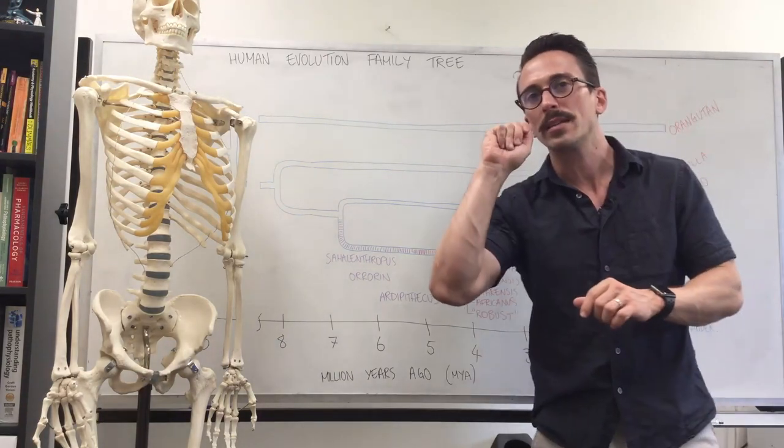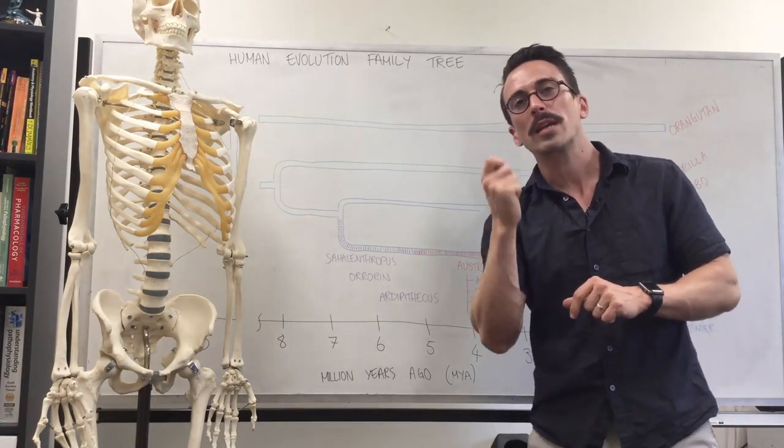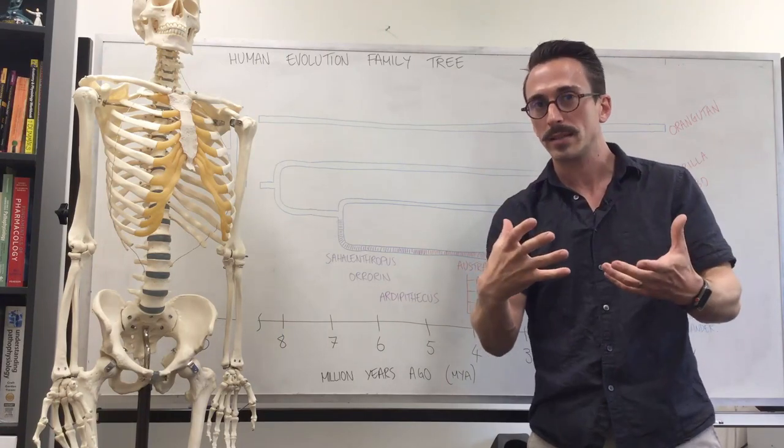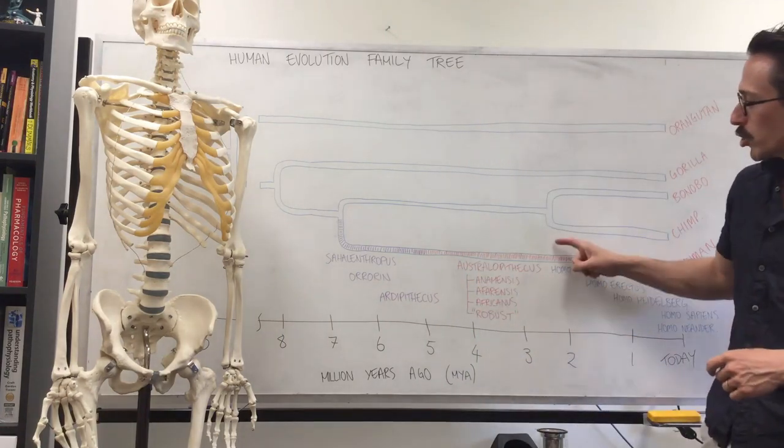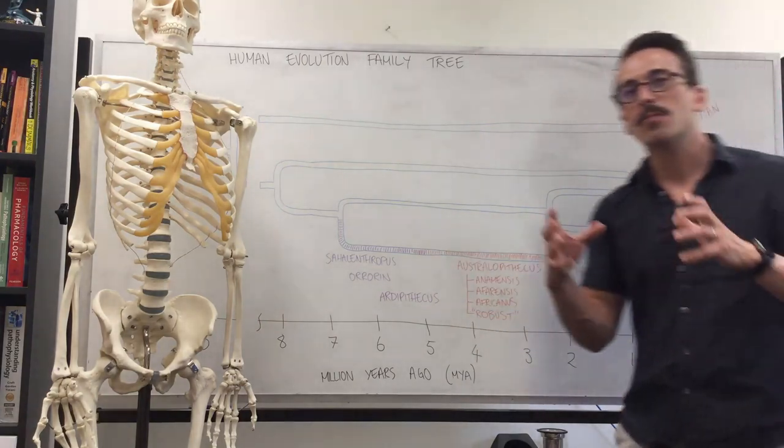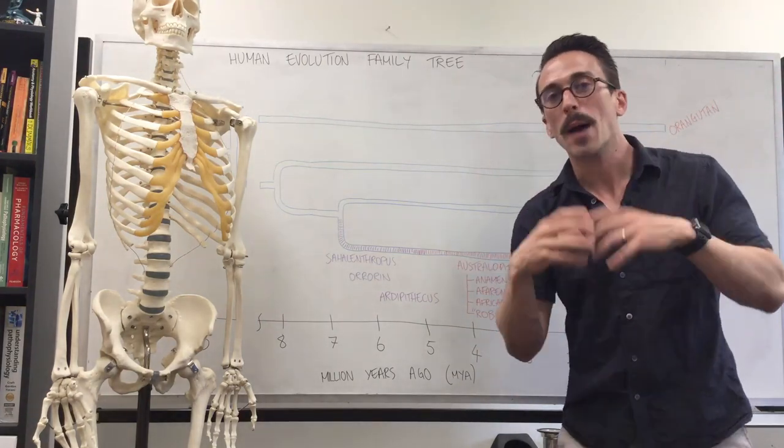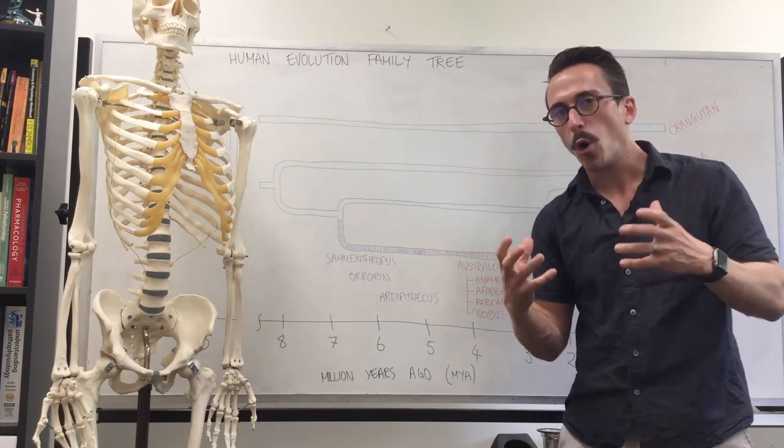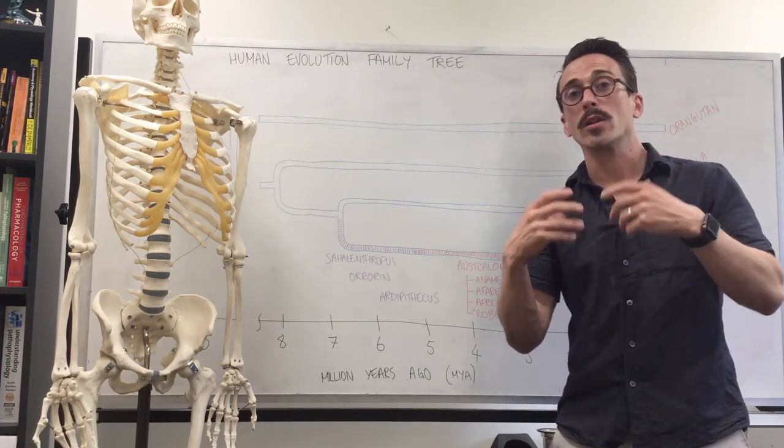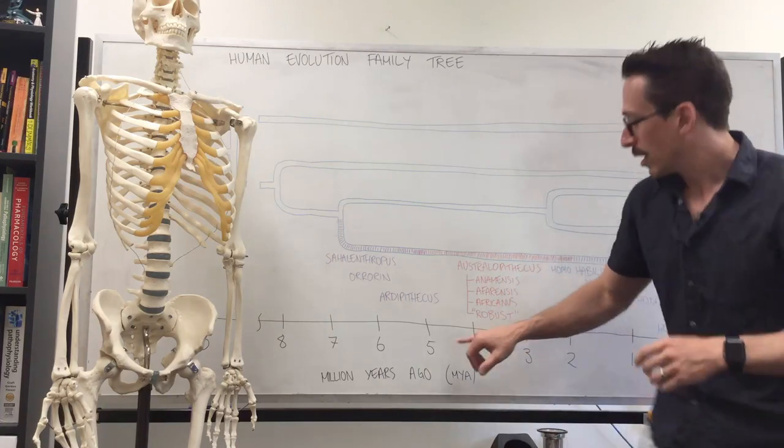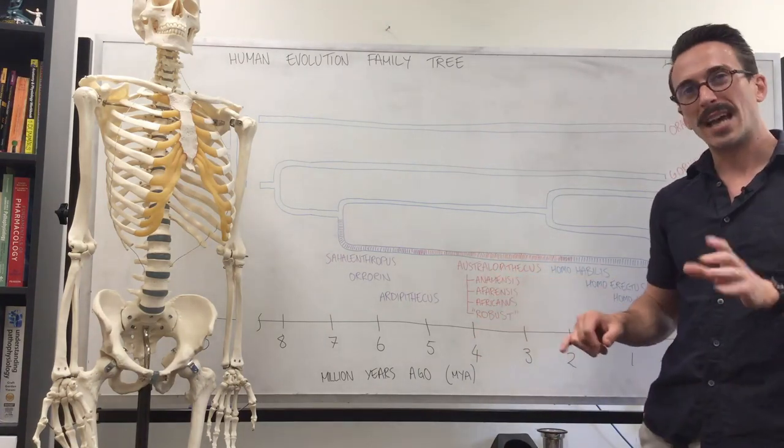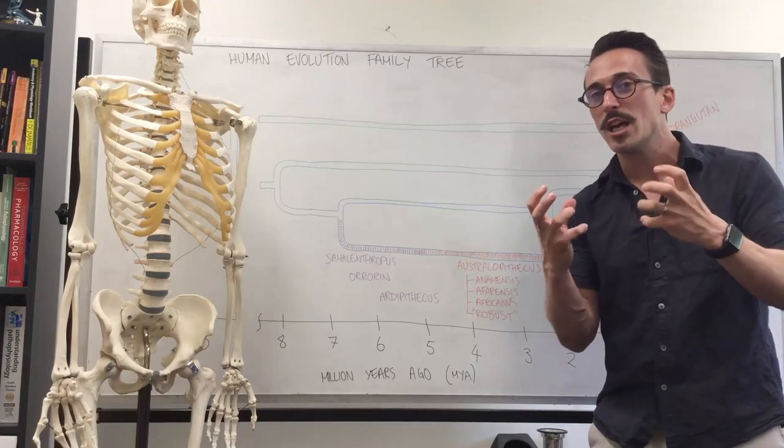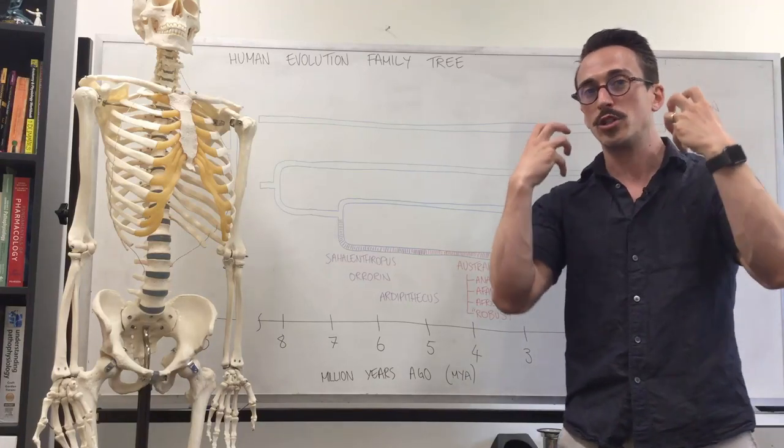But what we found was the teeth began to change, and the teeth were an indication specifically the canines became less sharp and less pronounced, and this was an indication that Australopithecus was eating predominantly or solely a plant-based diet. Very hard, very nutritionally poor plant-based diet, which required a lot of chewing. The robust Australopithecus actually took this to the extreme, and you'll see that their teeth are quite large, and that the jaw muscles are quite large too.